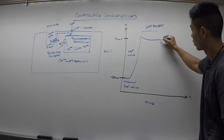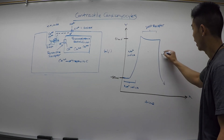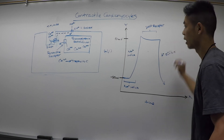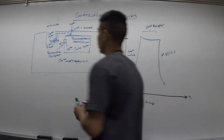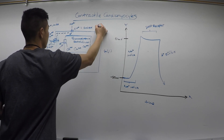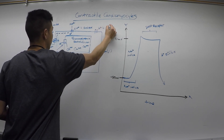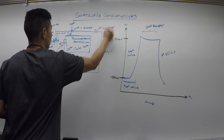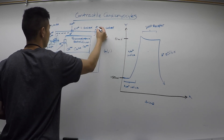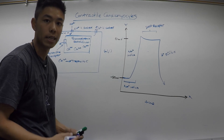Troponin C is going to remove the tropomyosin, which exposes the myosin binding sites and allows for muscle contraction. And of course we're going to have our typical K+ efflux — a voltage-gated K+ channel — which allows for the efflux of potassium out of the cell and allows for repolarization.